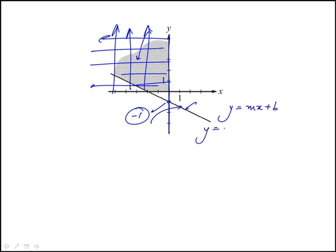b is minus 1, and we just have to find the slope. We know that its x-intercept is minus 2, so it goes through minus 2, 0. So when x is minus 2, y is 0.